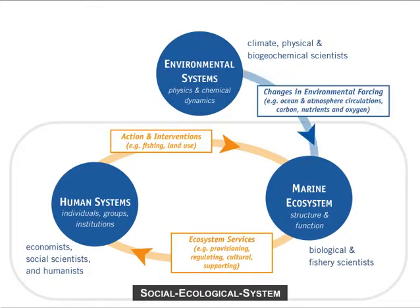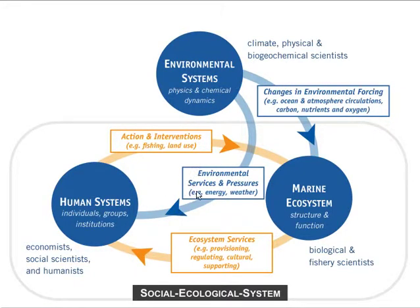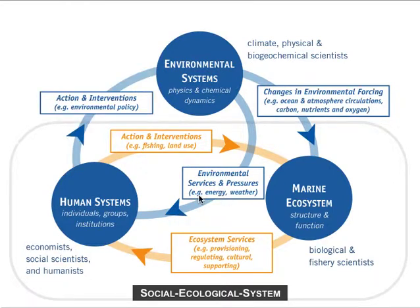If we list some of the pressures that the environmental system can exert on the marine ecosystem, we have changes in environmental forcing such as ocean and atmospheric circulation and biogeochemical cycling of nutrients such as carbon. We also know the environmental system can affect the human system directly through what I define here as environmental services and pressures — for example, energy and weather. Furthermore, the human system can affect the environmental system through actions and interventions such as environmental policy.